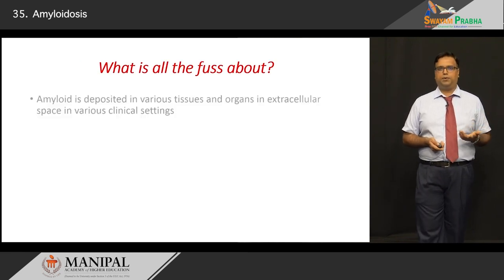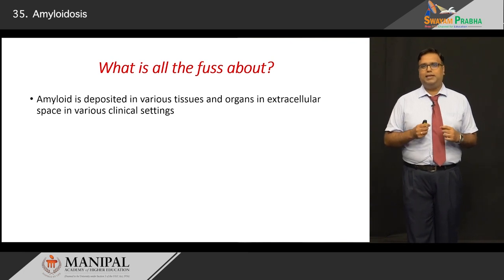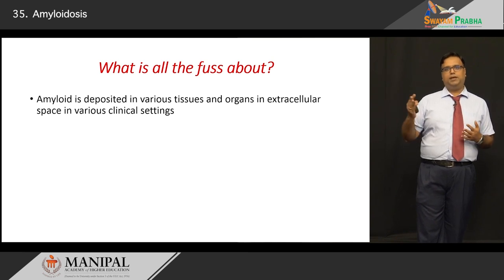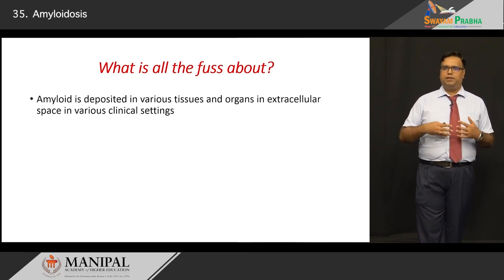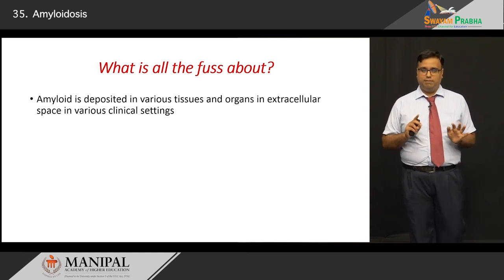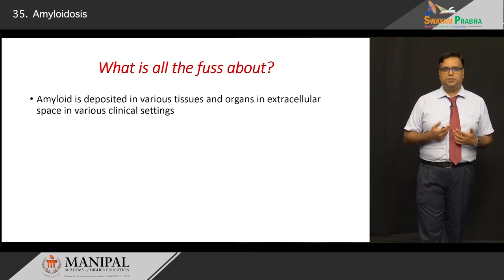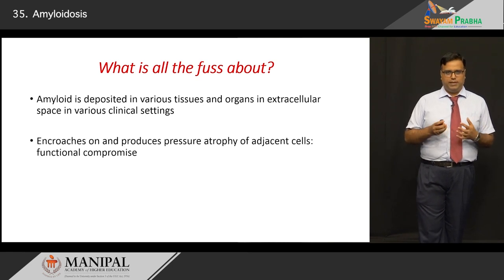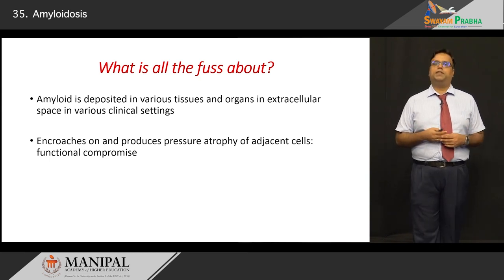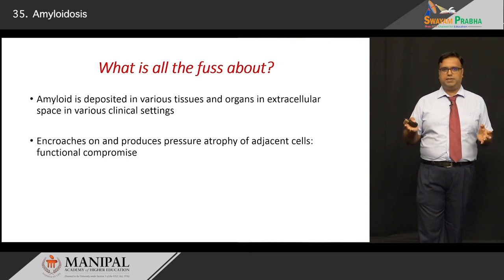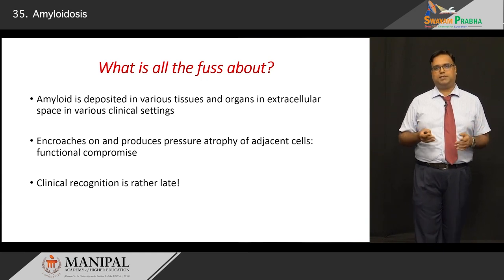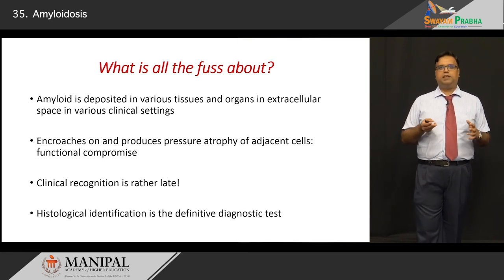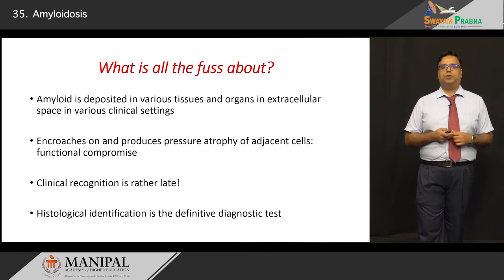Why do we have to learn about amyloidosis? Clinically, you may not be able to detect it — it is one of those conditions which slip by, and only light microscopy and ancillary tests will give you the answer. Although amyloidosis has far-reaching systemic effects and the patient may come with very confusing signs and symptoms, the index of suspicion is very poor. Because it gets deposited in multiple tissues and extracellular space, it causes pressure atrophy of adjacent cells, resulting in functional compromise. Clinical recognition is extremely late in the course of the disease, so you have to rely on good old histopathology for a definitive answer.